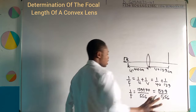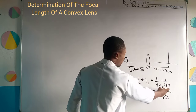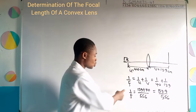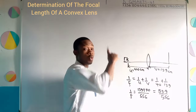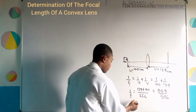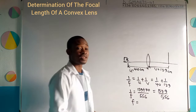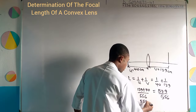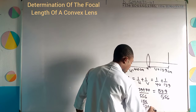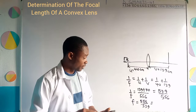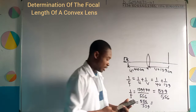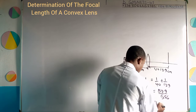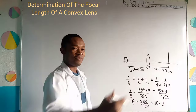So we have 1 over F equal to 53.9 over 556. To get the focal length, you inverse: F equals 556 over 53.9. When I worked that out, I got 10.315. So the approximate focal length is approximately 10.30.